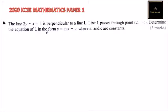What is important here is you should know the relationship between two perpendicular lines. The relationship is that the product of the gradients is always equal to -1.